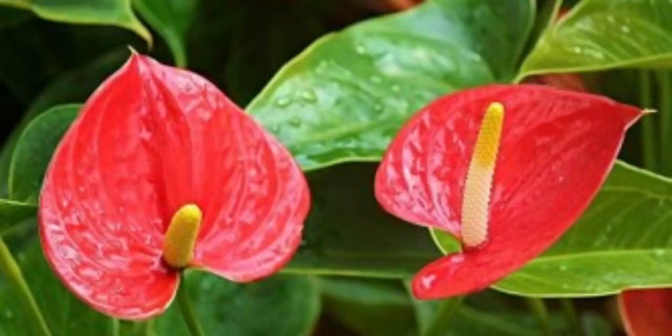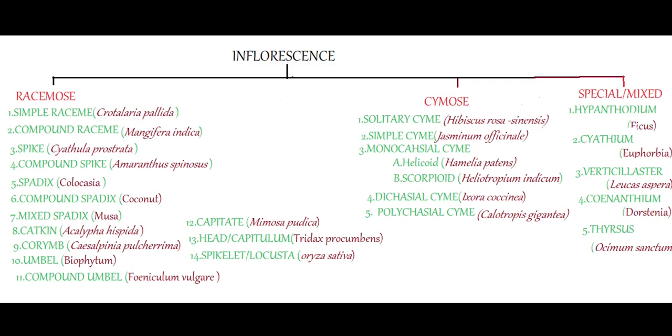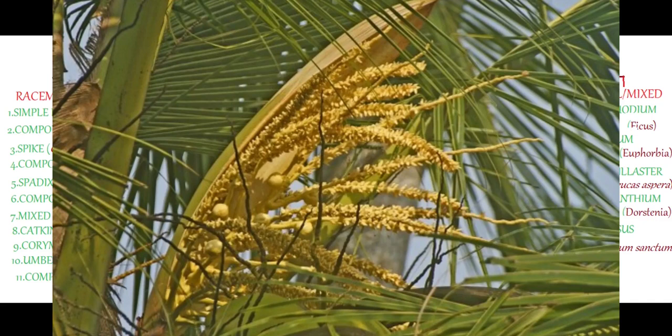The fifth one is spadix inflorescence. It is the characteristic inflorescence of Araceae and is a variation of spike inflorescence. Unisexual flowers are arranged on the inflorescence axis, and the whole inflorescence is covered with a membranous colored structure called a spathe. Example: Colocasia. The sixth one is compound spadix — simply a branched spadix. The whole inflorescence is covered with a boat-shaped leathery spathe. Unisexual flowers are arranged, with female flowers towards the base and male flowers towards the tip. Example: coconut.